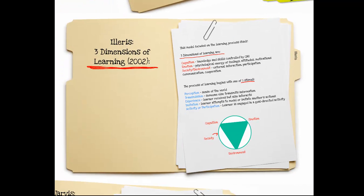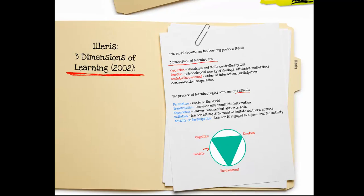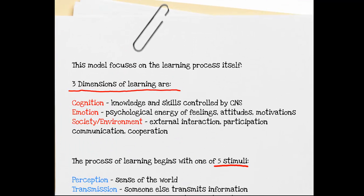Ilaris proposed three dimensions of learning, and this model focuses on the learning process itself. These dimensions are cognition, which refers to our knowledge and skills; emotion, which is the psychological energy of our feelings, our motivations, and attitudes; and environment and society — how do we participate in and interact with our environment.